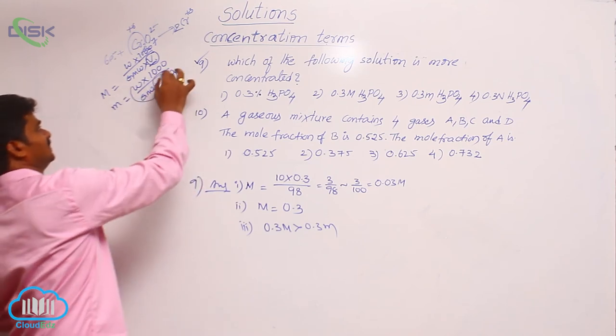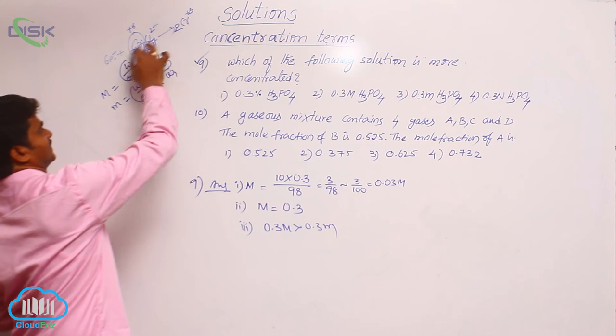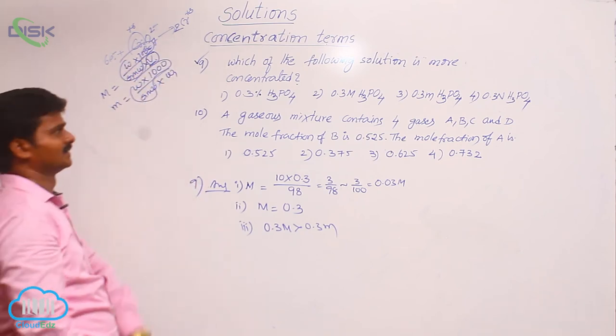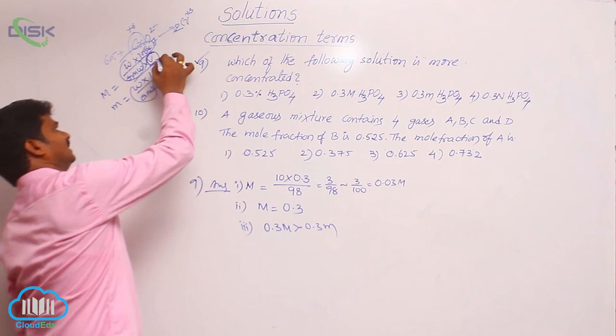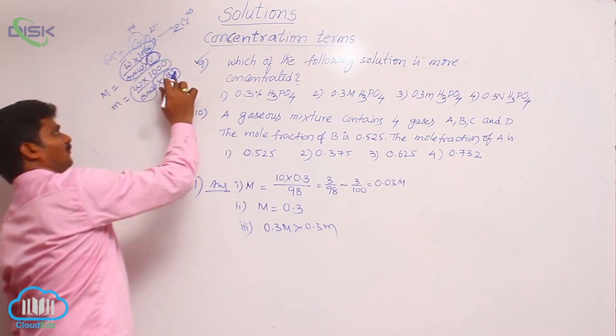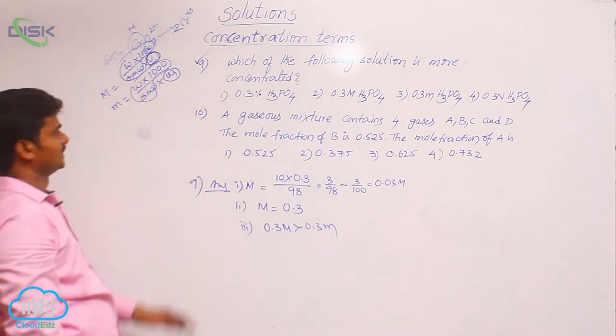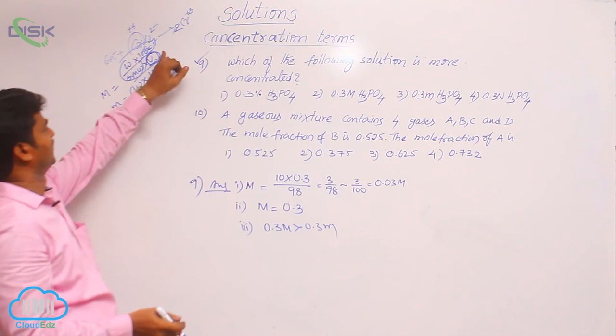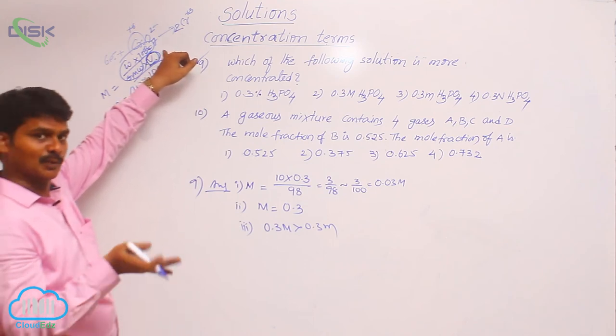That means this term is same in both cases. Weight times 1000 by gram molecular weight is same in both cases. But the difference is V, volume of solution, versus W1, mass of solvent. Here total denominator term is of solvent, but here V is of solute and solvent.